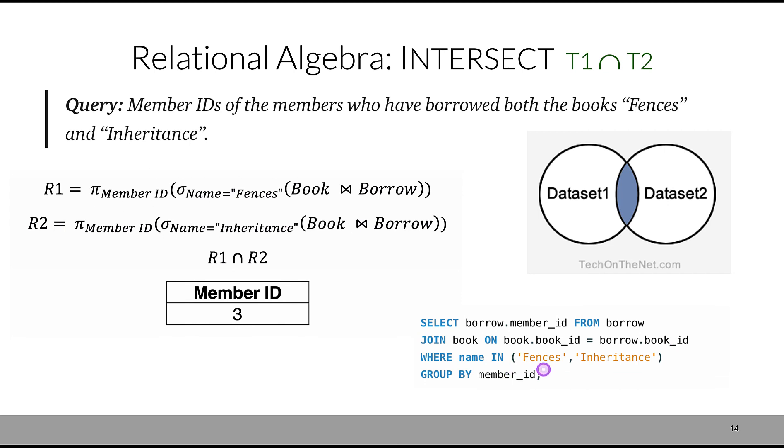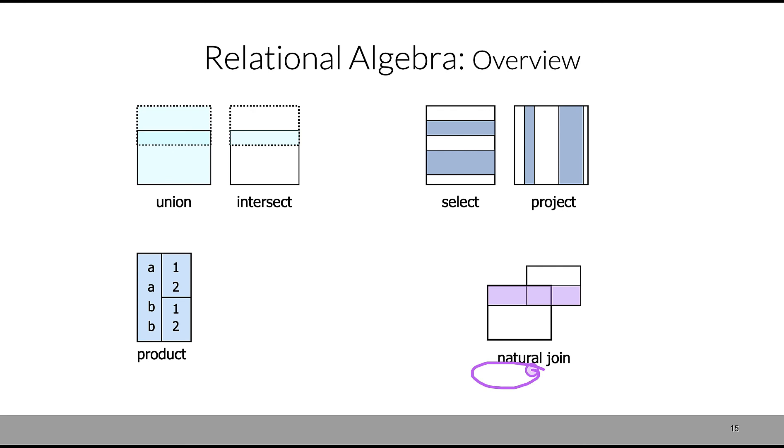Good, we've covered quite a few relational algebra operators. Just to refresh our learning: we have union, we have intersect, we're also selecting and projecting. Project works column-wise or attribute-wise; selecting works per tuple. We also had product when we're combining two tables, and we had natural join, which has a condition for matching attributes.